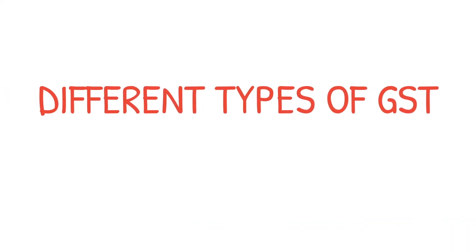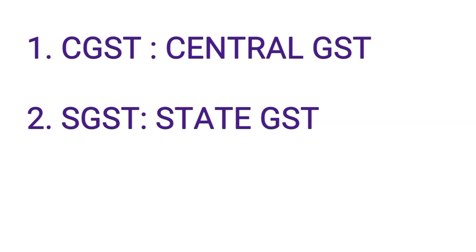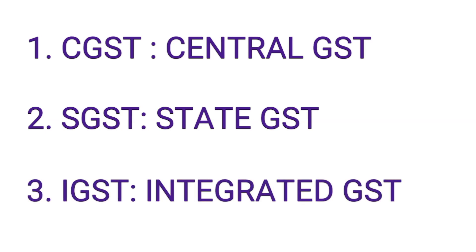Let us look at the different types of GST. Number 1 is CGST, that is Central GST. This tax goes to the Central Government. Number 2 is SGST, that is State GST. This tax goes to the State Government. These two taxes are calculated whenever the transaction is within the same state. Number 3 is IGST, that is Integrated GST. This goes directly to the Central Government and is calculated whenever there is a transaction between two states of the country.